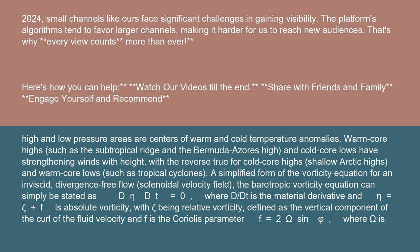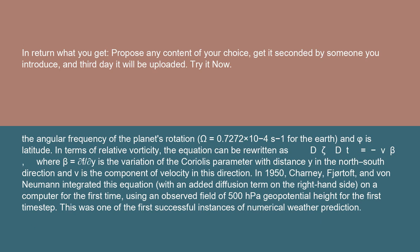Relative vorticity is defined as the vertical component of the curl of the fluid velocity, and f is the Coriolis parameter: f equals 2Ω sin(φ), where Ω is the angular frequency of the planet's rotation — Ω equals 7.272 × 10⁻⁵ s⁻¹ for the Earth — and φ is latitude.